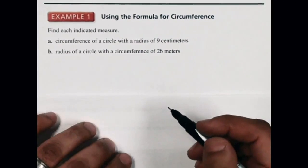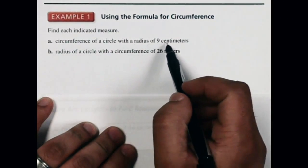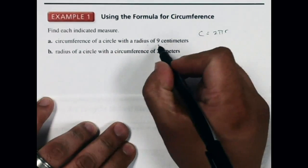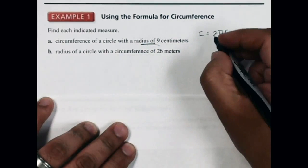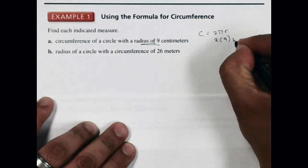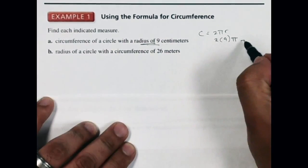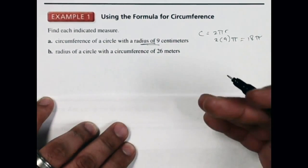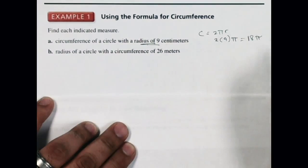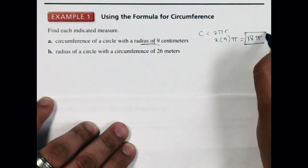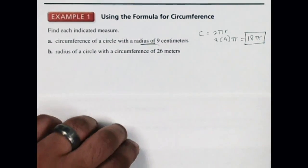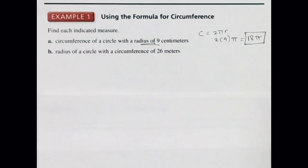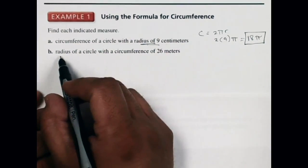Let's look at some examples. For the circumference of a circle with a radius of 9 centimeters, I'm going to use 2 times pi times the radius. So this is going to be 2 times 9, which is 18 pi. Unless I tell you to round to a decimal value, I want exact answers, meaning we leave it in terms of pi. The answer for example 1a is 18 pi.